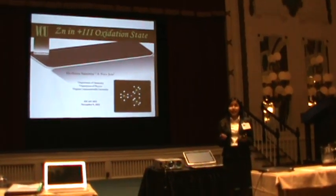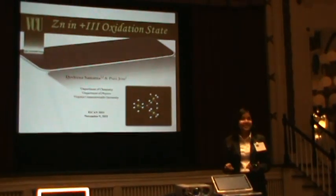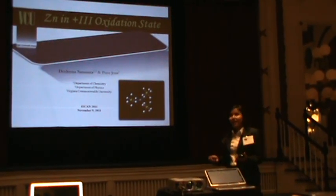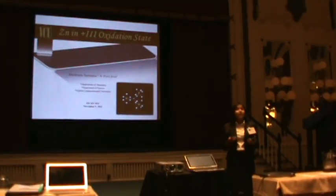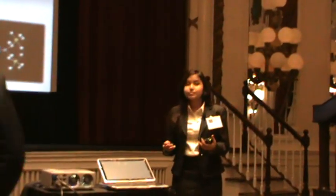Good evening everyone. I know you've all had a very long day and I'm very glad that you're still here for the last talk of the day. So without further ado, let's begin. The chemistry and reactivity of elements is guided by their ability to lose, accept, or share. The transition elements have a very rich history because they exhibit variable valency and have many oxidation states owing to their incomplete d-shell. I would like to show you that by choosing specific ligands, it is possible to increase the oxidation state of an element beyond what is currently known, and I will do so by choosing zinc as an example.